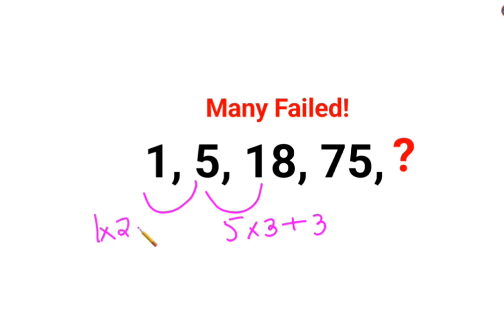1 multiplied by 2 plus 3. So technically this should be 18 multiplied by 4 plus 3, because the number with which you are multiplying is getting added every time. So 18 multiplied by 4 is 72 plus